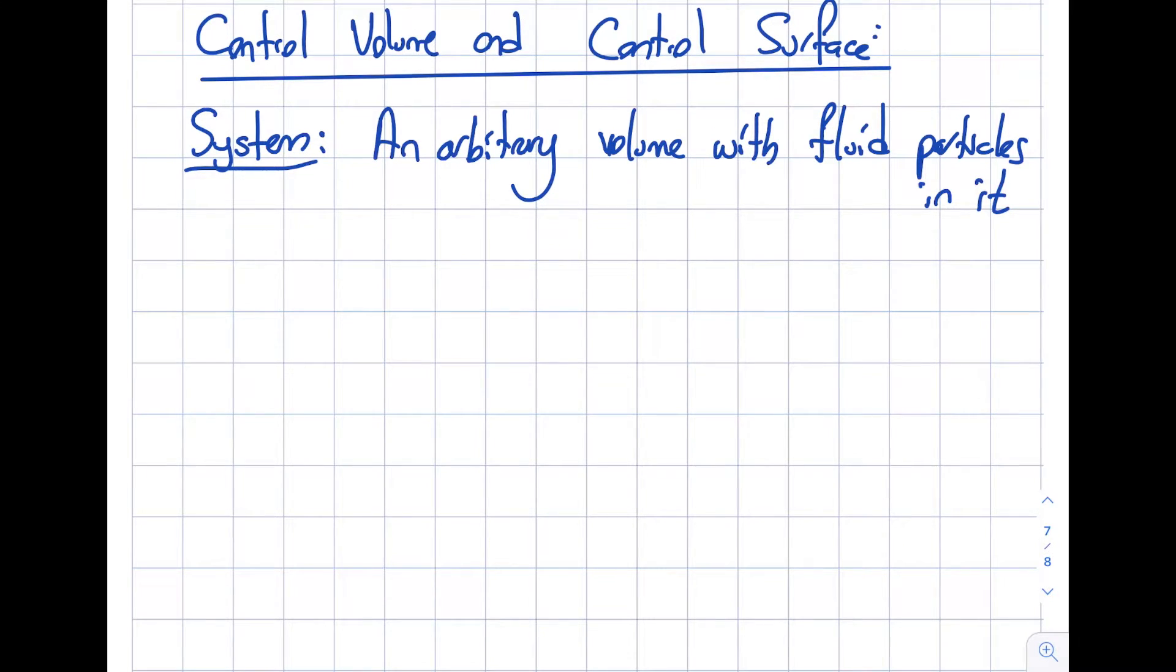Another example I can give from thermodynamics: we have these pistons that go up and down—that is a system. In the turbine, I can pick the volume inside of it and analyze this. You can see that it goes fairly wide—it's an arbitrary volume with fluid particles in it.